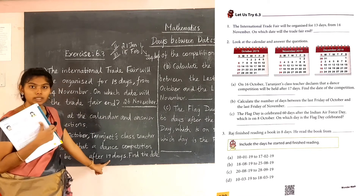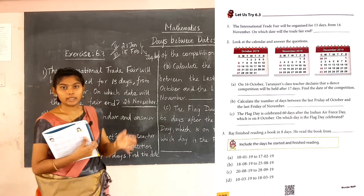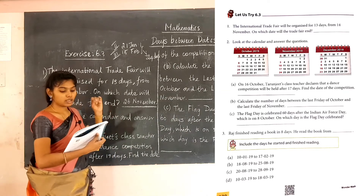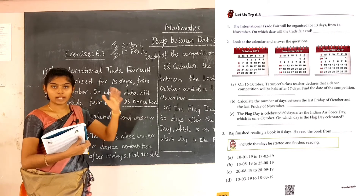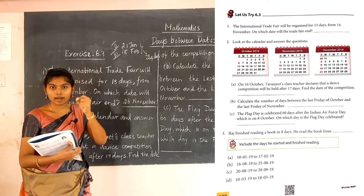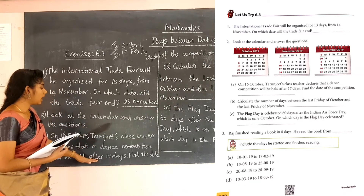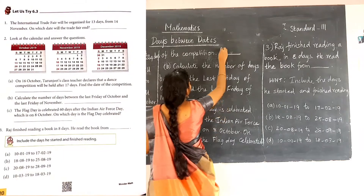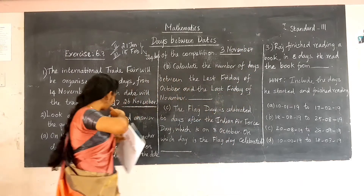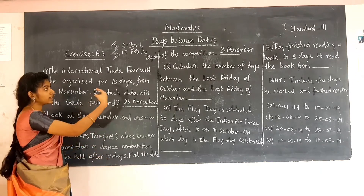After 17 days the competition will be held. See the calendar and count the days from 16 October. From 16, count: 17, 18, 19, 20 and so on up to 17 numbers. Count 17 dates on the calendar from October 16, and you will get the answer as 3rd November. So the competition date is 3rd November.